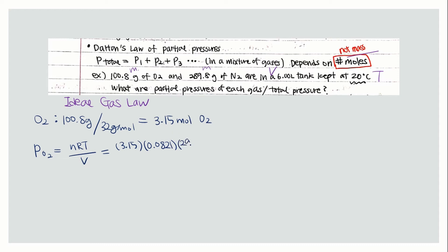Times 293, the temperature in Kelvin, divided by the volume which is 6.00 liters. Then you get 12.6 atm oxygen.